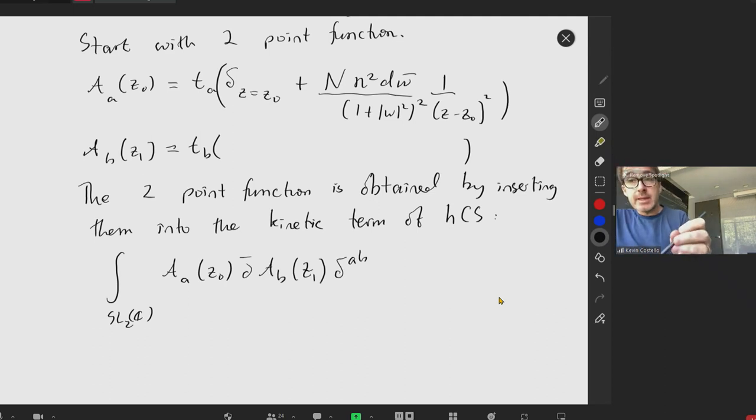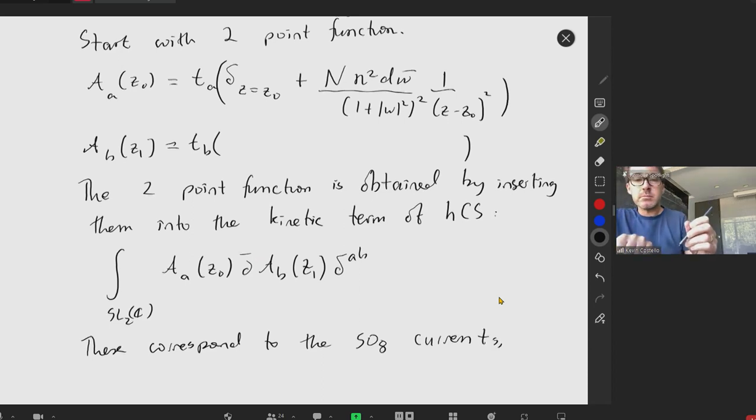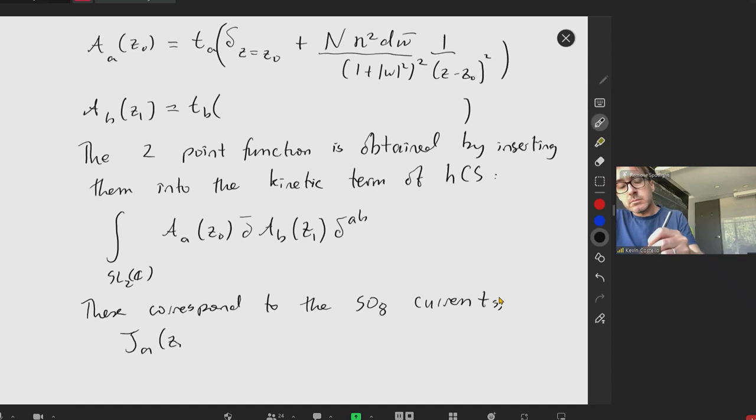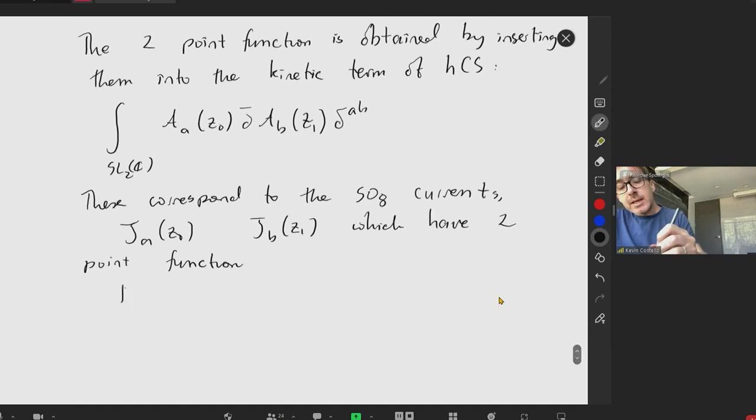So since these states correspond to the SO8 current in my current algebra, these have two-point function that goes like N delta AB over z0 minus z1 squared. So this is what we would like to reproduce.